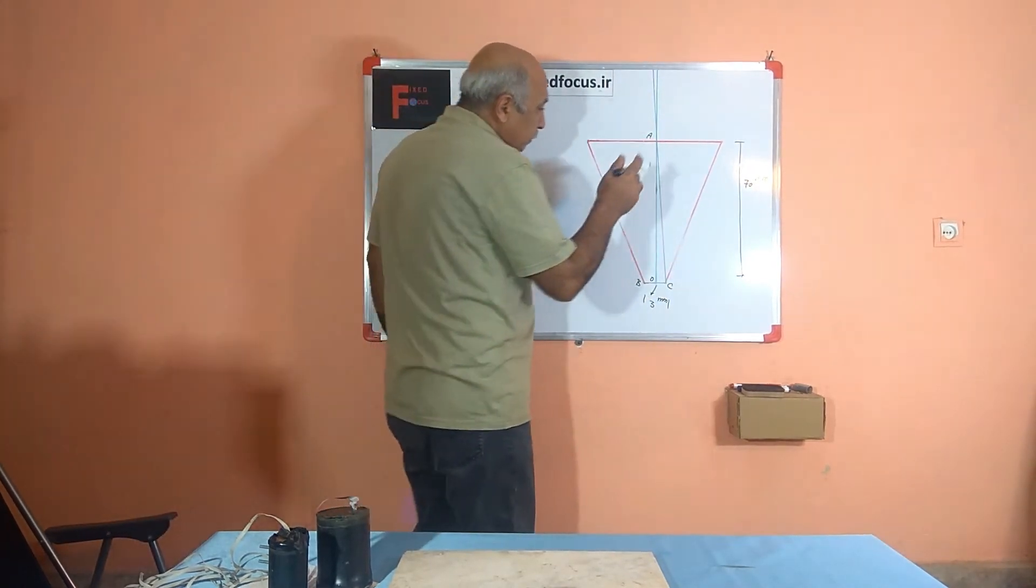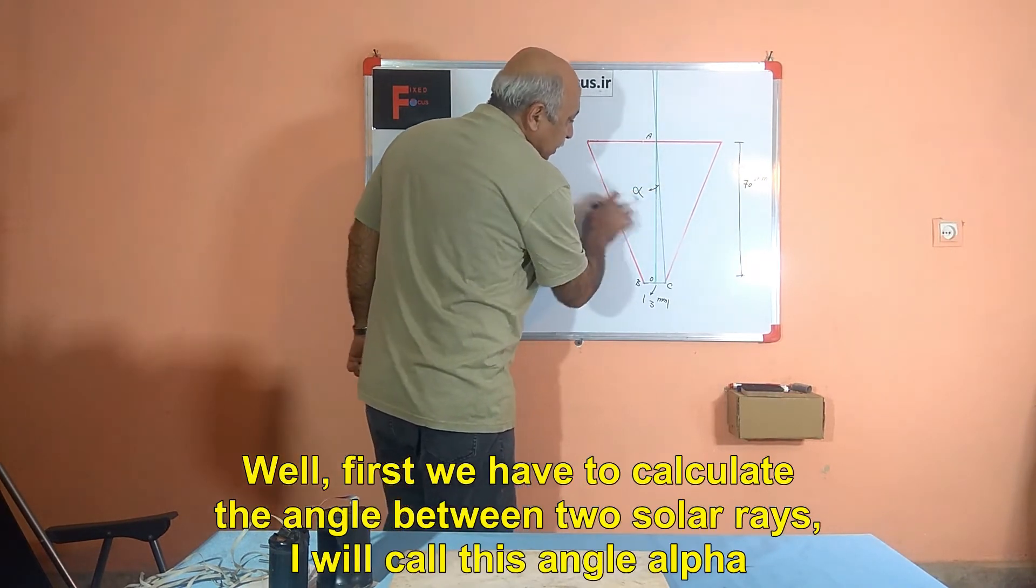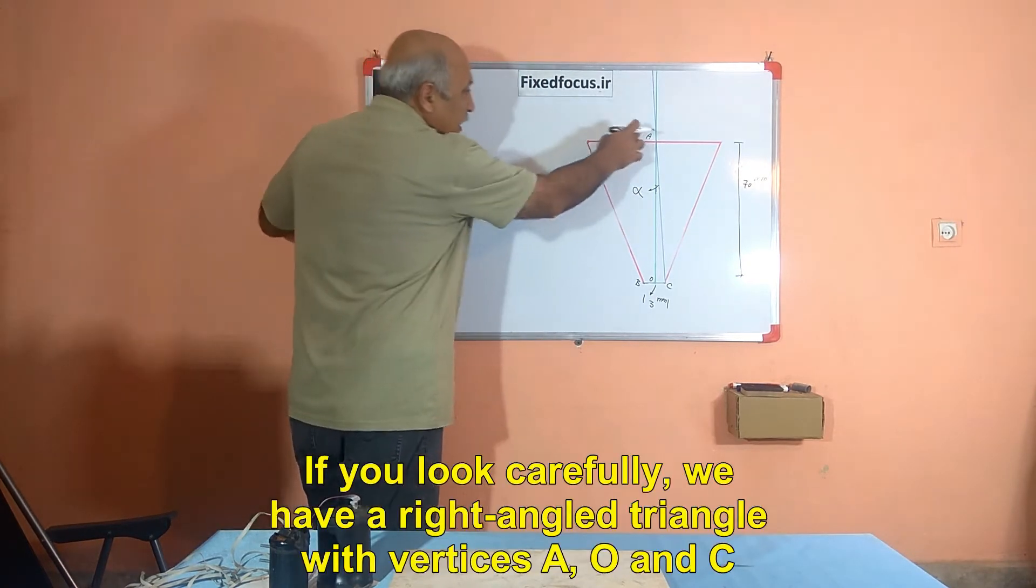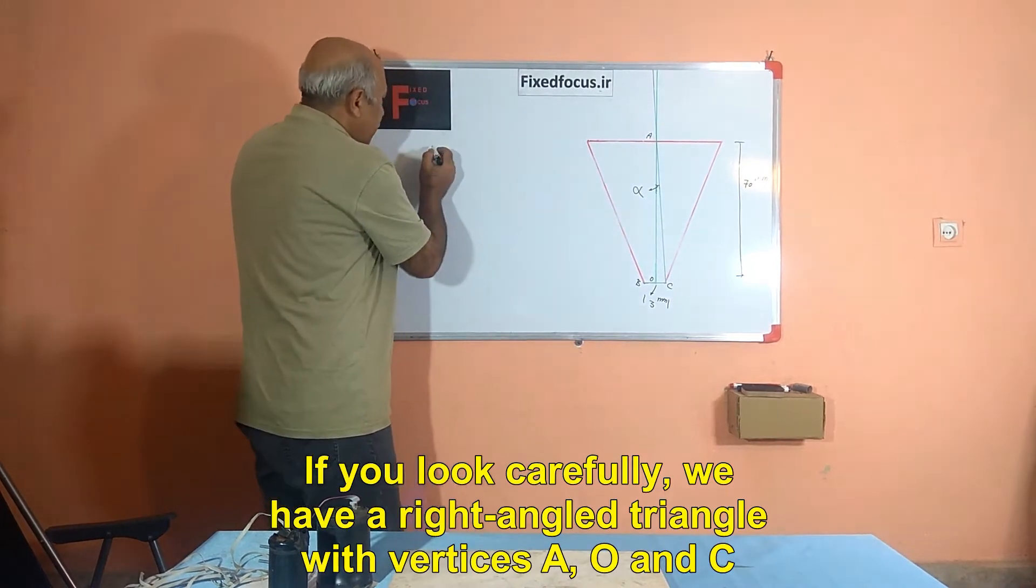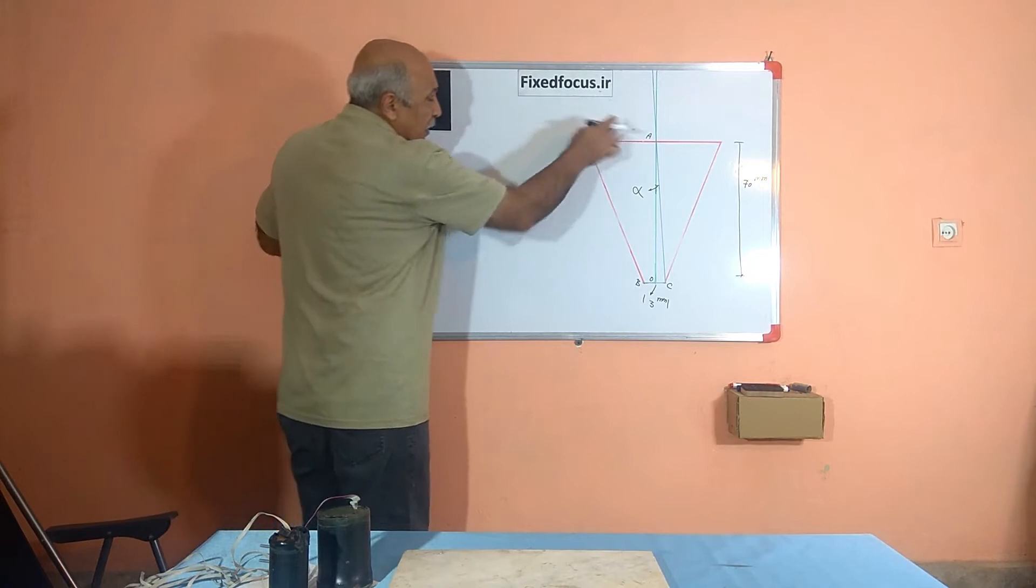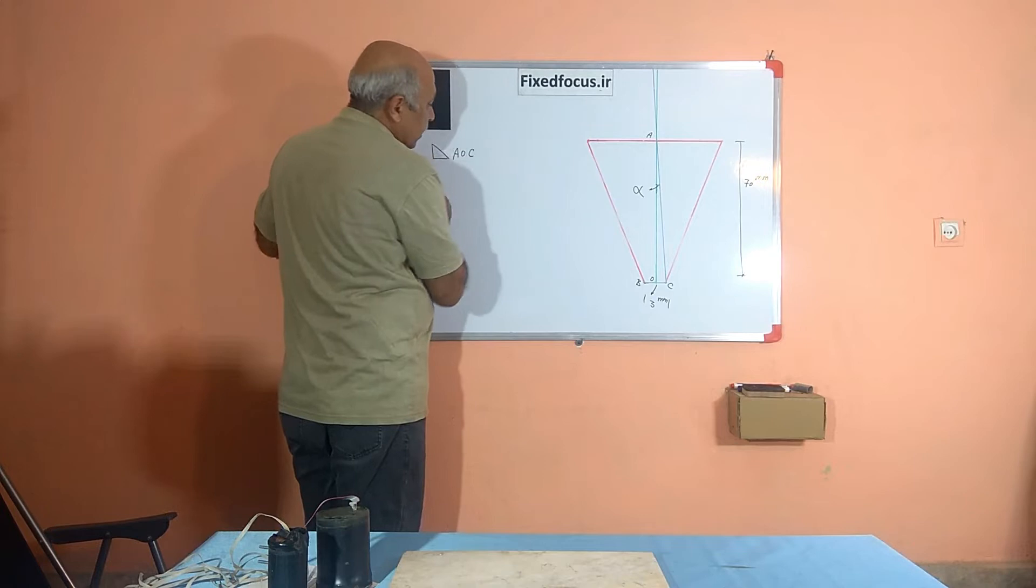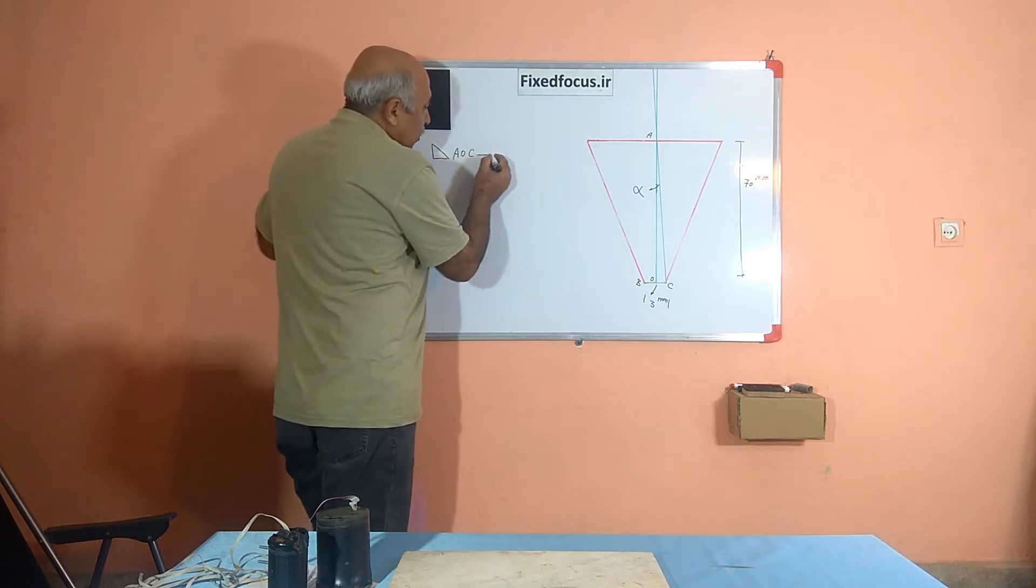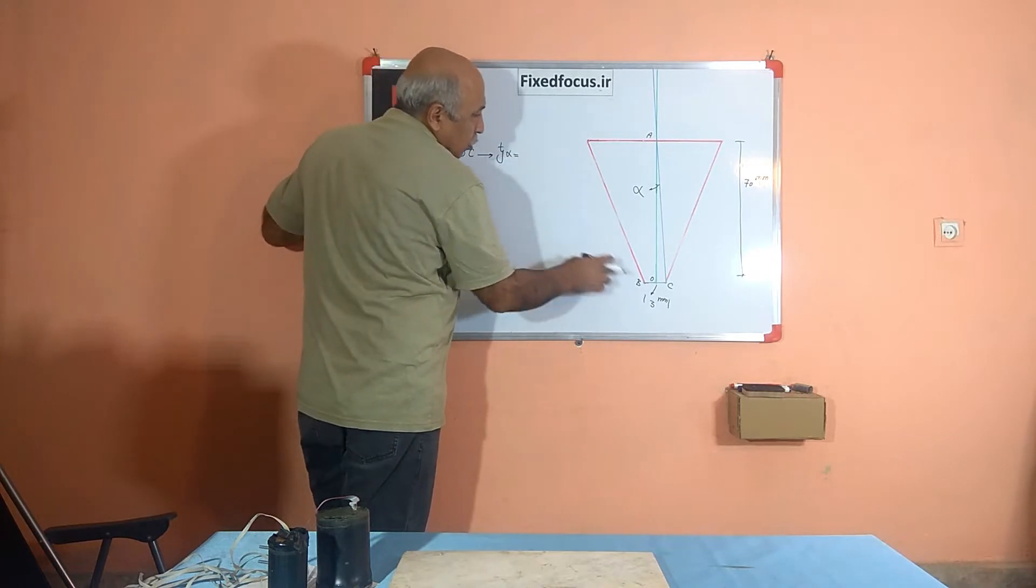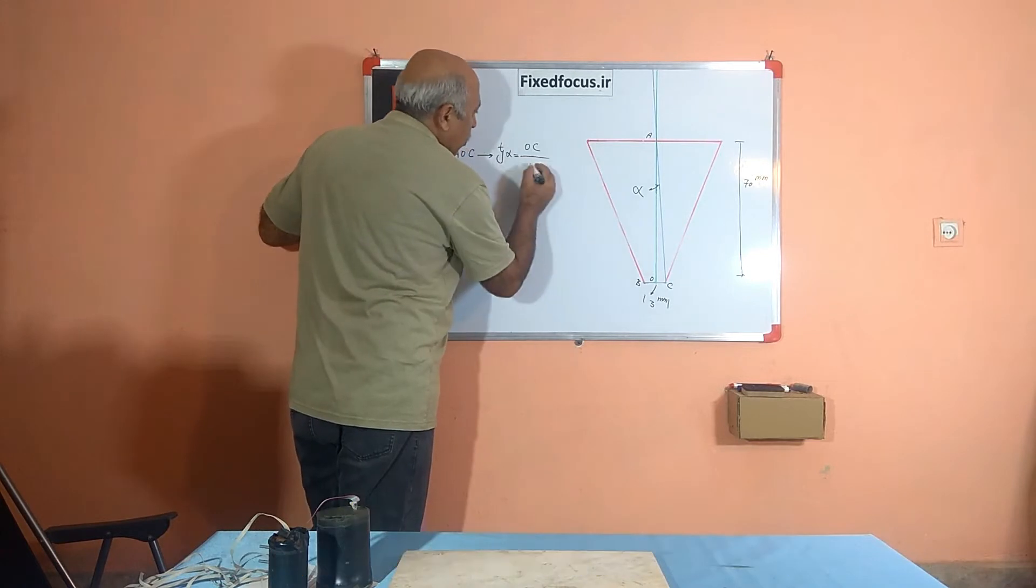Well, first we have to calculate the angle between two solar rays, I will call this angle alpha. If you look carefully, we have a right angle triangle with vertices A, O, and C. O, A, and C right triangles. In this triangle, we have tangent alpha equal to O, C, to A, O.